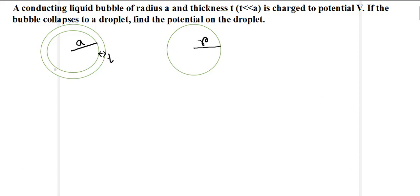A conducting liquid bubble of radius a and thickness t, where t is much much less than a, is charged to potential V. If the bubble collapses to a droplet, find the potential on the droplet.